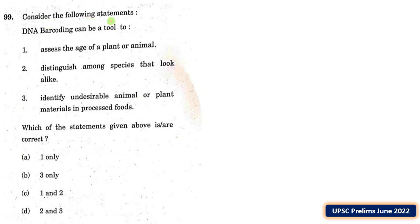Consider the following statements: 1 — DNA barcoding can be a tool to assess the age of a plant or animal; 2 — distinguish among species that look alike; 3 — identify undesirable animal or plant materials in processed foods. Which of the statements are correct? Options: A — 1 only; B — 3 only; C — 1 and 2 only; D — 2 and 3 only.